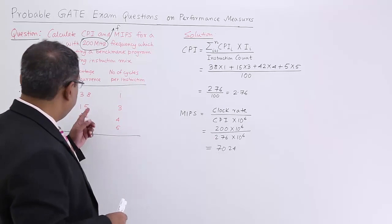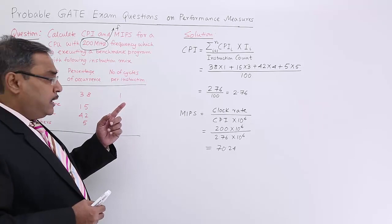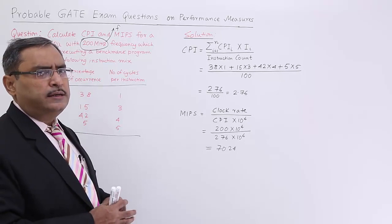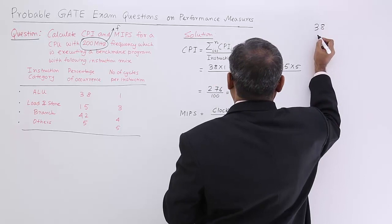Now, you see we are having here 38 percentage, so out of 100, 38 number of instructions with the CPI 1. So 38 into 1, 15 into 3, and then 42 into 4, then 5 into 5. This is the total cycle count. By how many instructions are there? 100. So 100 will be the instruction count. Let me go for the addition.